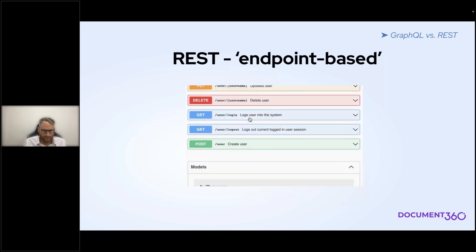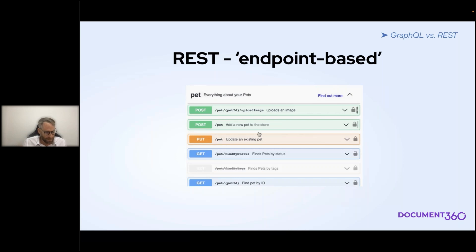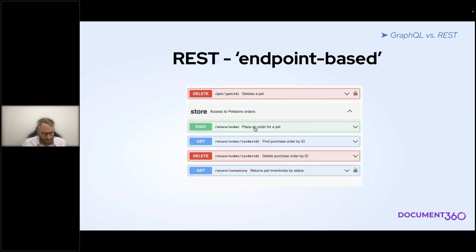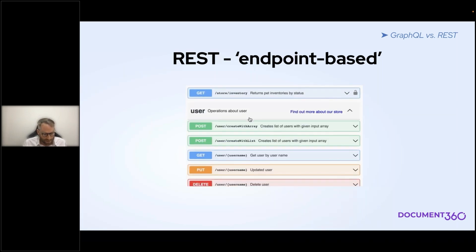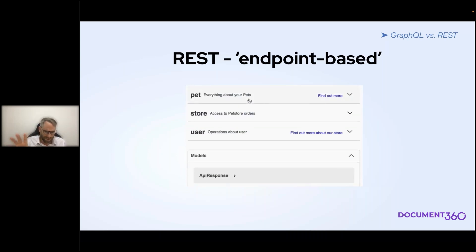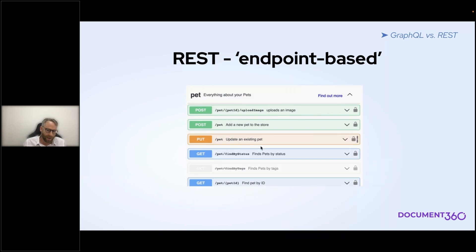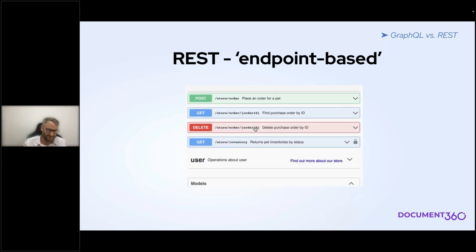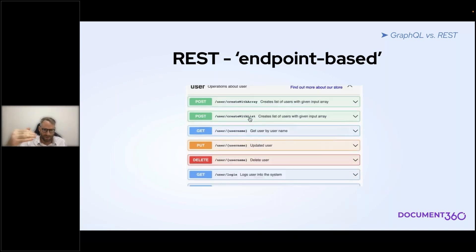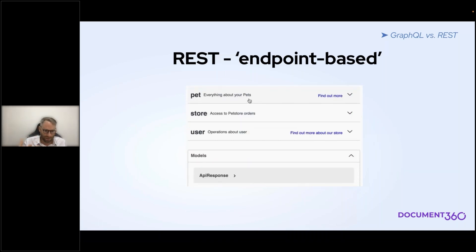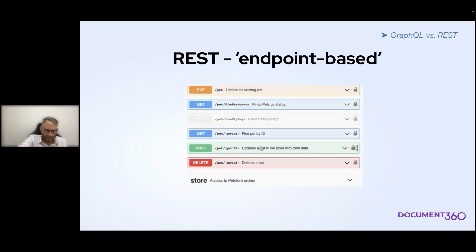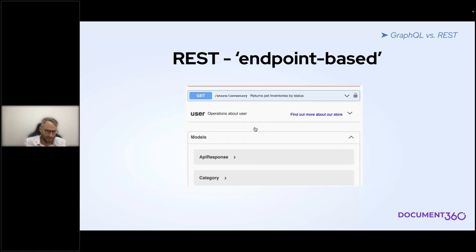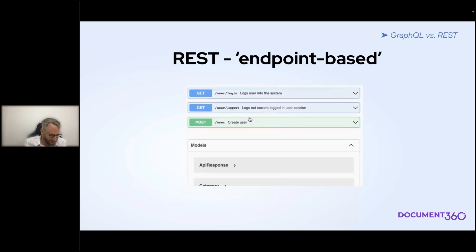So REST is endpoint-based. What we're looking at here is Swagger UI, which many of you have seen — it's a tool used to interact with REST APIs using a web interface. This is the Swagger pet store, which is kind of an iconic REST API example. You can quickly see the structure of REST: it's basically a whole lot of endpoints — there can be hundreds or even a thousand — and each endpoint might support different CRUD operations like POST and DELETE. So it's essentially a huge list of URLs when you look at the documentation.